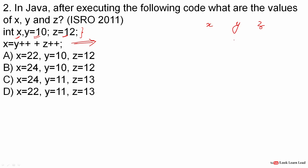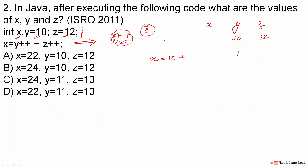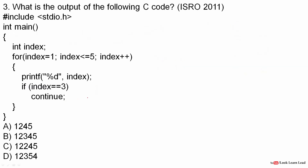We have x equals y++, meaning we use the current value of y which is 10, and then increment y to 11. Next we add z++, using the current value of z which is 12, then incrementing z to 13. So x equals 10 plus 12 which is 22, y equals 11, and z equals 13. The answer is D: 22, 11, and 13.